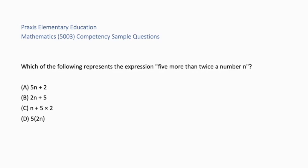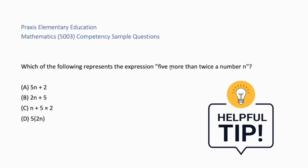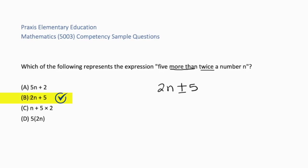Which of the following represents the expression 5 more than twice the number n? A, 5n plus 2. B, 2n plus 5. C, n plus 5 times 2. Or D, 5 times 2n. In this problem it's important to look at key concepts such as more than and twice. We have twice the number and 5 more than. We will be using addition for more than. The correct answer is B, 2n plus 5. Twice the number, 5 more than.